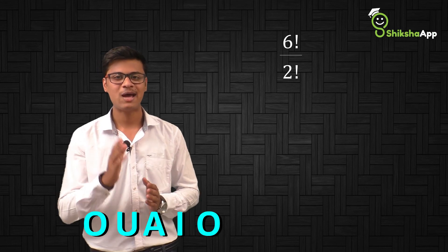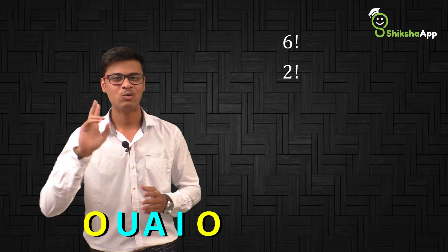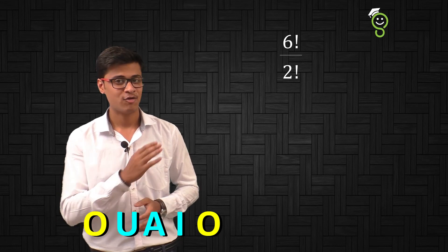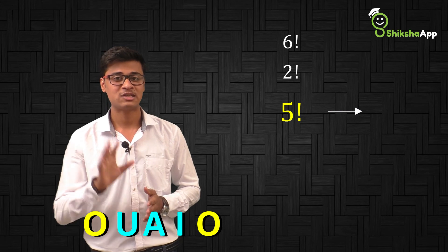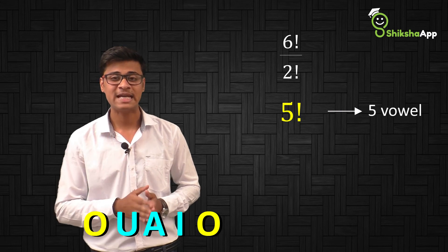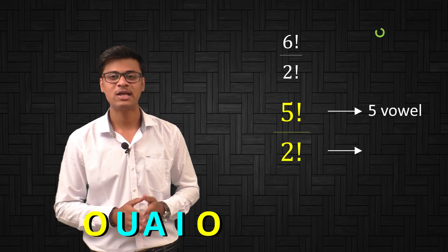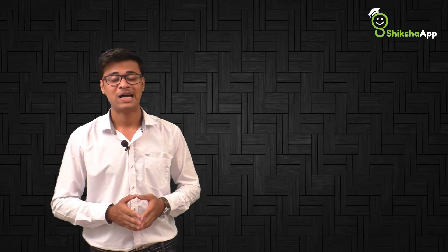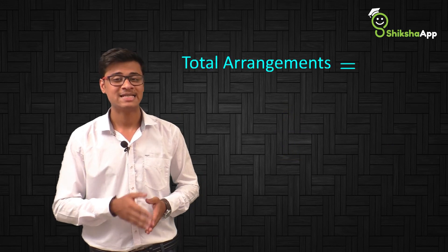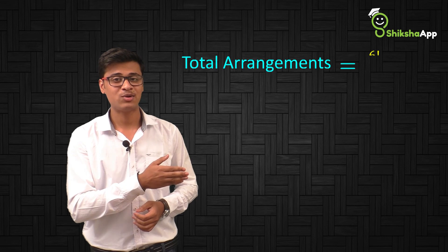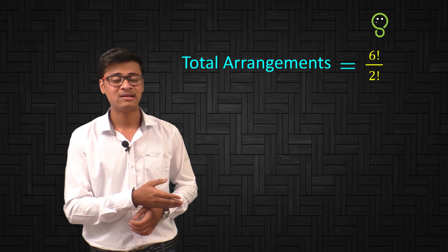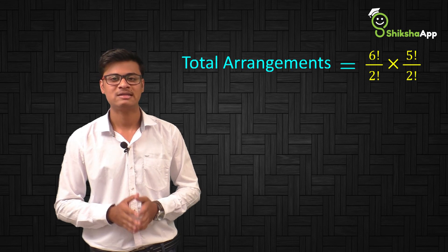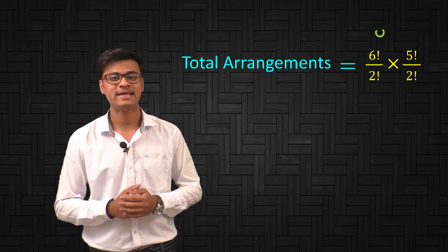Now the vowels we have are O, U, A, I, and O. You can see O appears twice. So the vowels can be arranged in 5 factorial divided by 2 factorial, because we have 5 vowels and O appears twice. So the total arrangements will be 6 factorial divided by 2 factorial, multiplied by 5 factorial divided by 2 factorial.